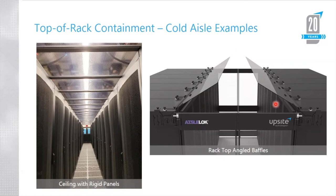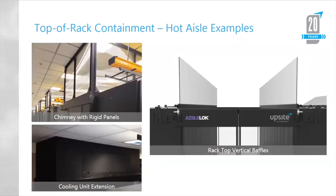In most cases these are approved by the local authority having jurisdiction. There are national fire codes, but the local authority — your fire marshal — is who you need to check with on any of these solutions to make sure they approve of what you're doing. For hot aisle containment, here are some examples: this would be a chimney sitting on top of the cabinets going all the way up to the drop ceiling.